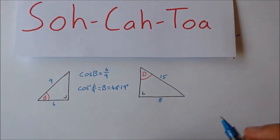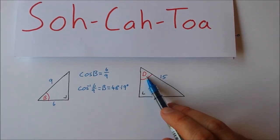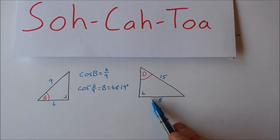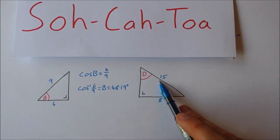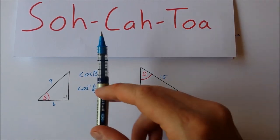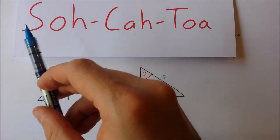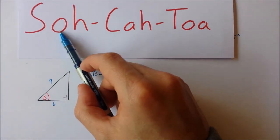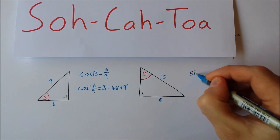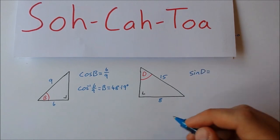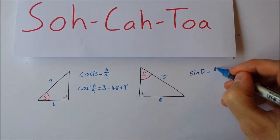And the last one then. I'm looking for this angle D. I have my opposite side. I have my hypotenuse. Opposite and hypotenuse means I'm going to use sine. Sine is opposite over hypotenuse. So the sine of D is equal to 8 over 15.